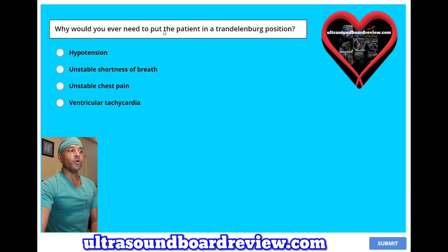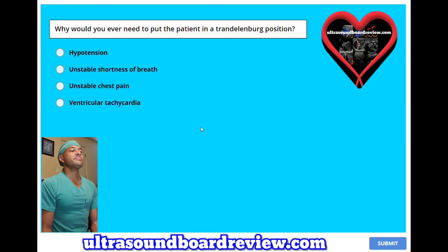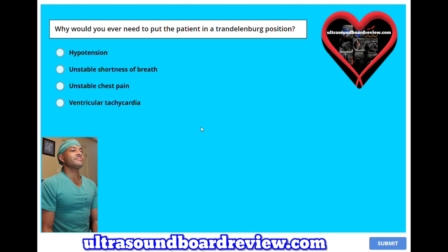Why would you ever need to put a patient in a Trendelenburg position? A, hypotension. B, unstable shortness of breath. C, unstable chest pain. Or D, ventricular tachycardia. The answer is A, hypotension.